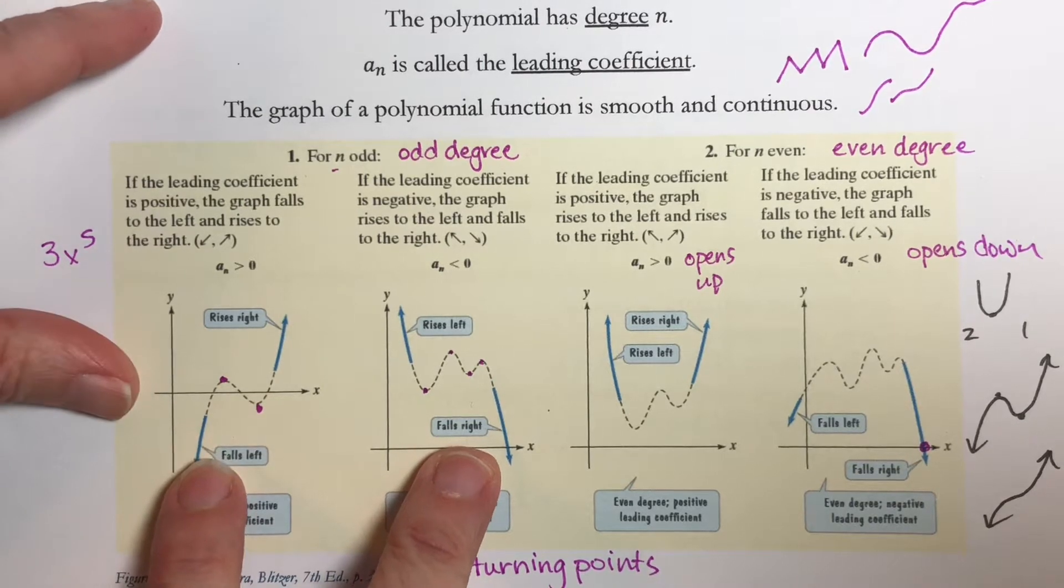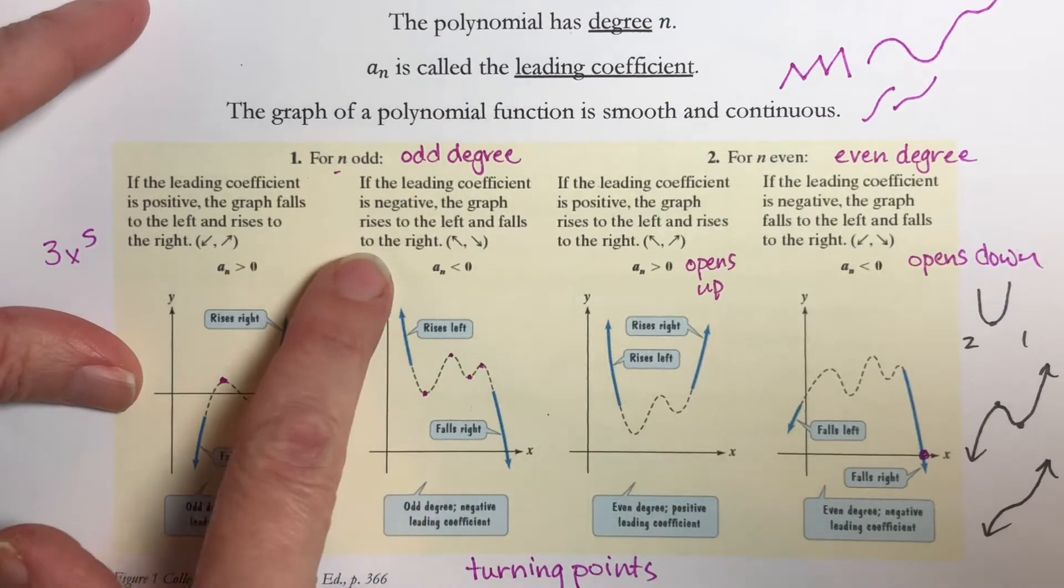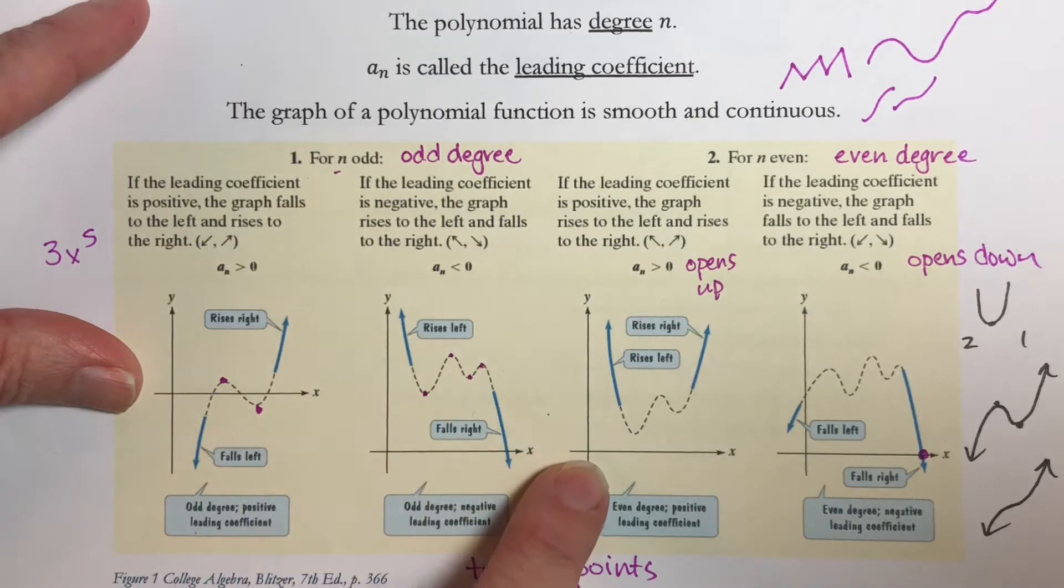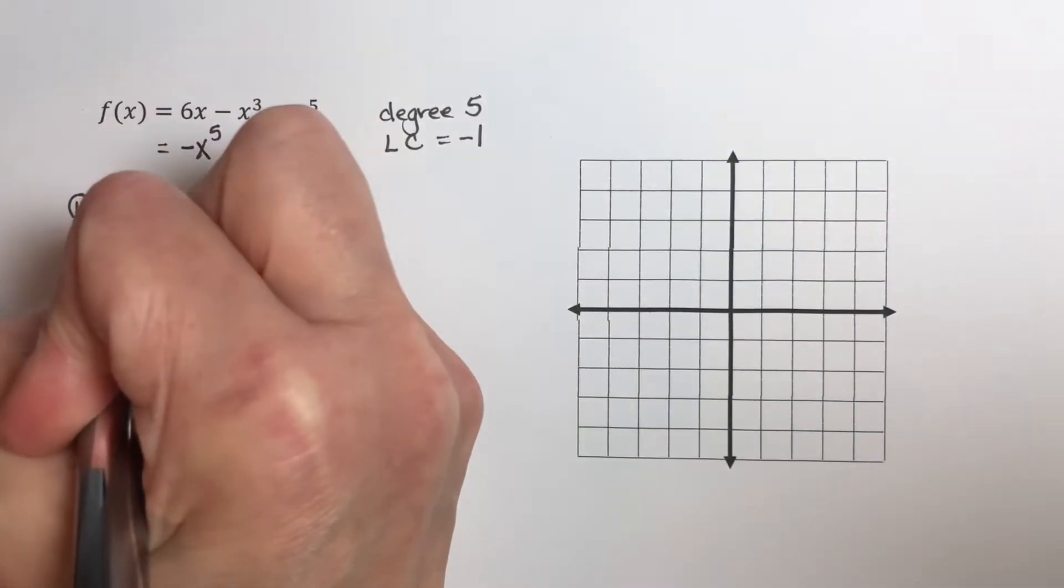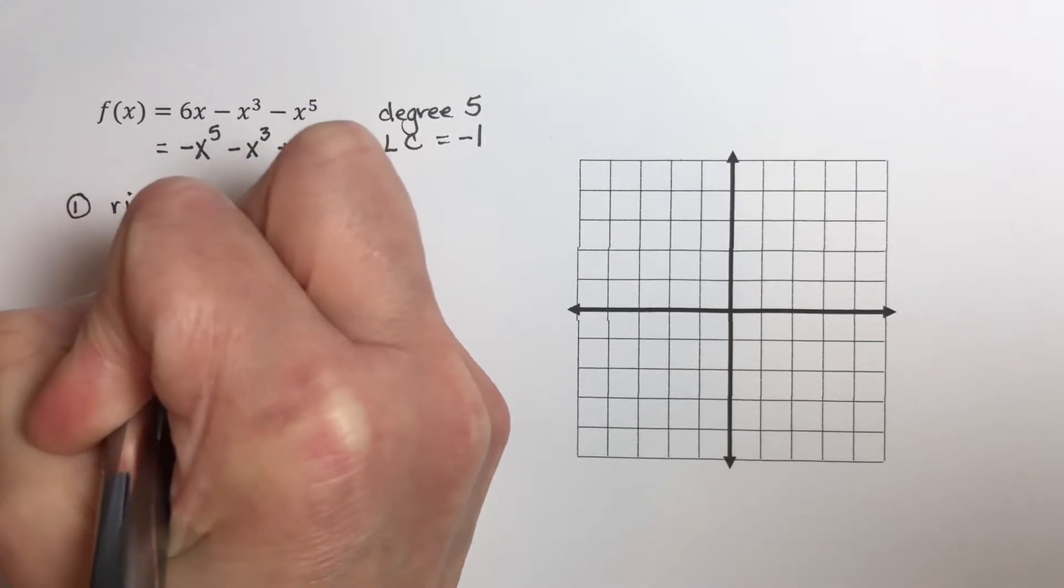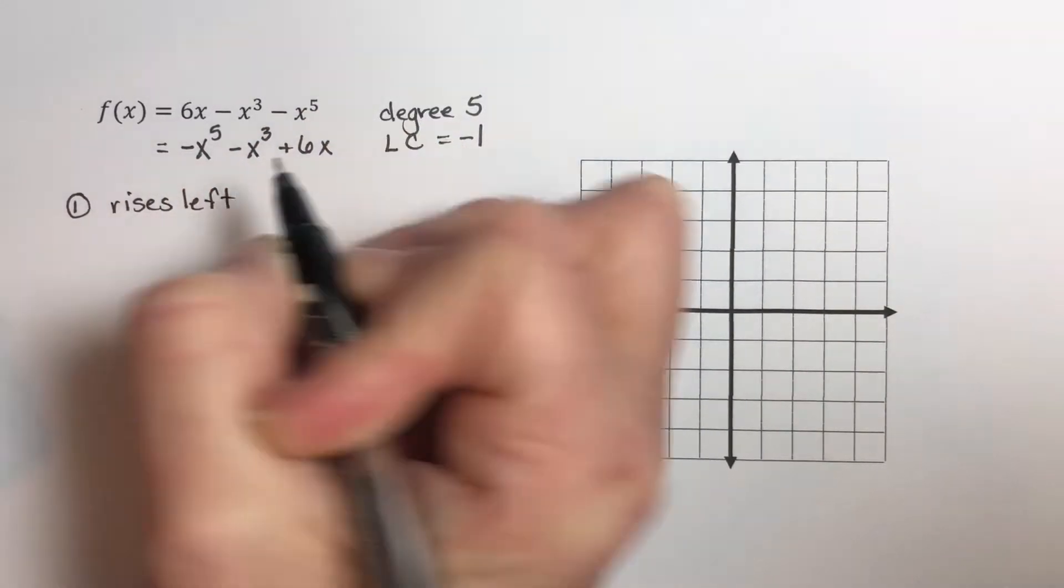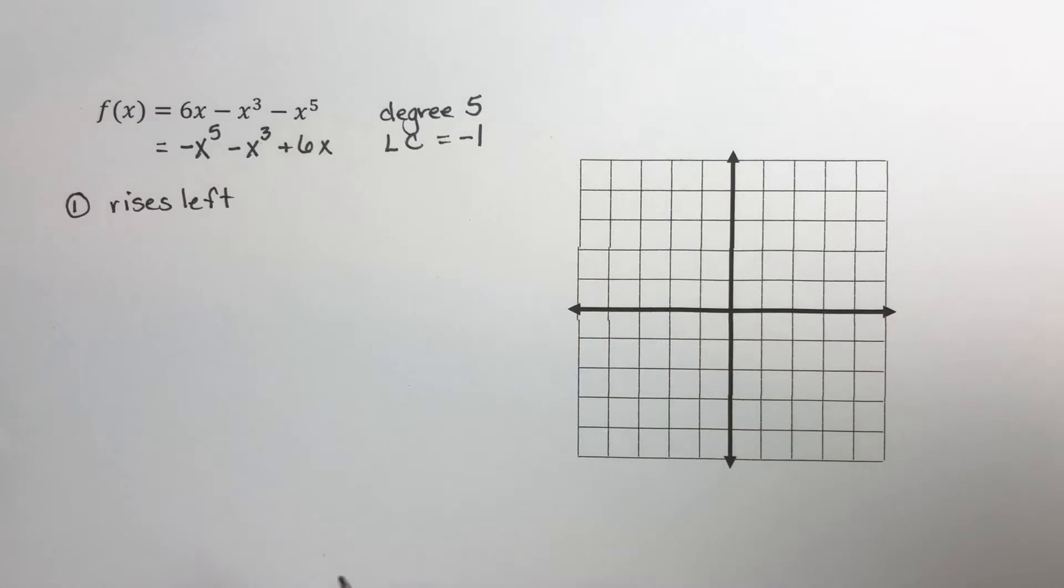And our leading coefficient is a negative number, so we're going to have something like this. And so it rises left and falls to the right.